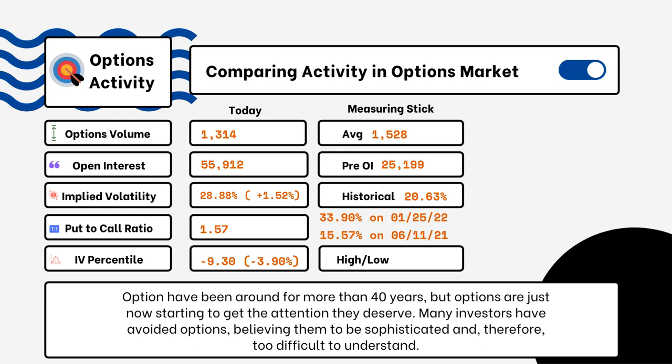We've provided details on today's option activity. What you'll be able to see here is options volume, open interest, implied volatility, put-to-call ratio, and IV percentile. One of the most popular indicators for traders is the put-to-call ratio. When we're looking at put-to-call ratios, if we see anything above one, that is telling us that there is more bearish sentiment in the market rather than bullish.